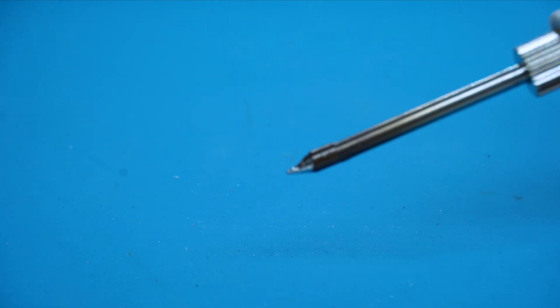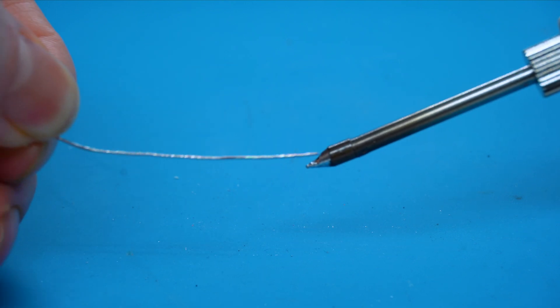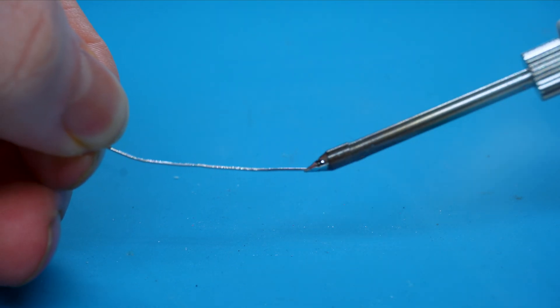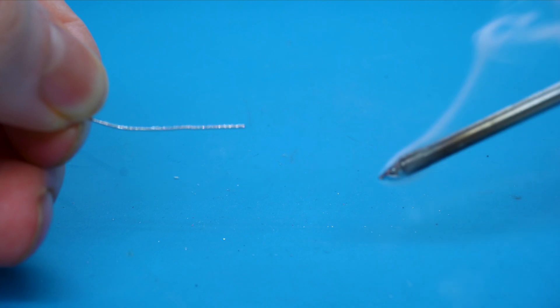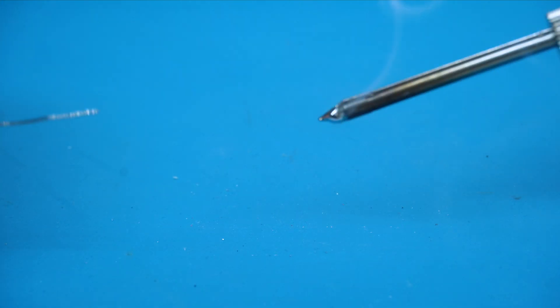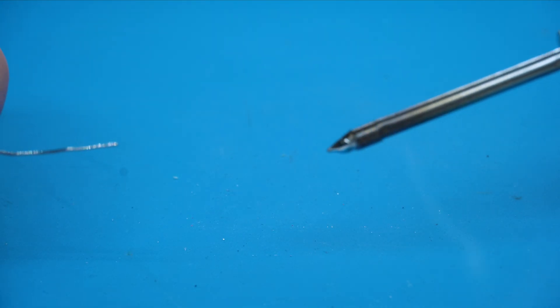Before we can start soldering these joints we need to prep the soldering iron. So the first thing we're going to do is what's called tinning the tip, where we put a little bit of solder on the end of the soldering iron and this just primes the iron ready for when we do the actual soldering and apply the soldering iron tip onto the pin.